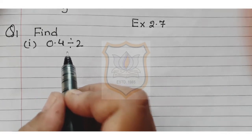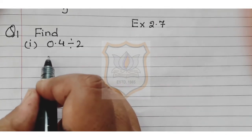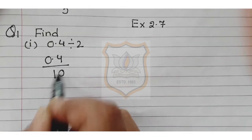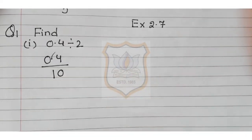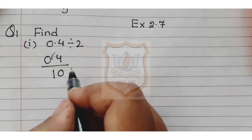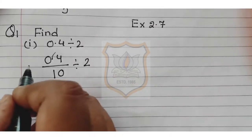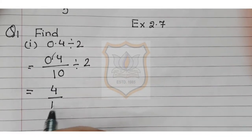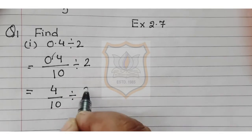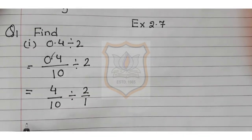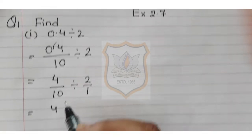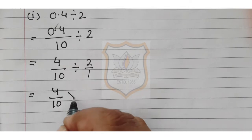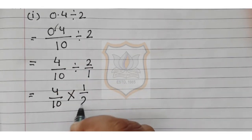The denominator can be 10, 100, or 1000. Now 0.4 has 1 decimal digit, so the denominator is 10. So we write it as 4 upon 10, divided by 2 upon 1. Now, dividing changes to multiplying by the reciprocal, that is 1 upon 2.